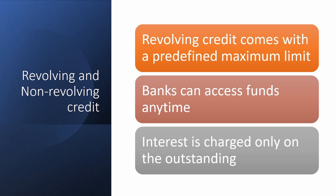Revolving credit comes with a predefined maximum limit. For large corporations, they need credit for various purposes — R&D investment, marketing, expanding into new geographies, launching new products, or expanding production capacity. They need this money not necessarily all at once, because a large sum sitting idle in a bank account is wasteful. For big corporations, these needs typically unfold over a couple of years.